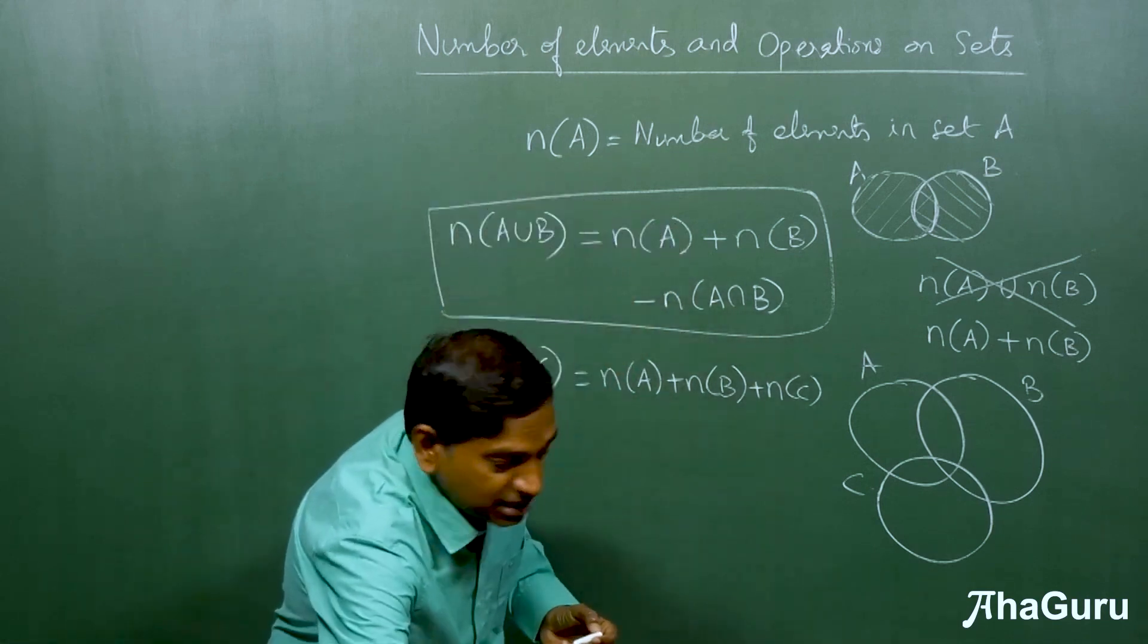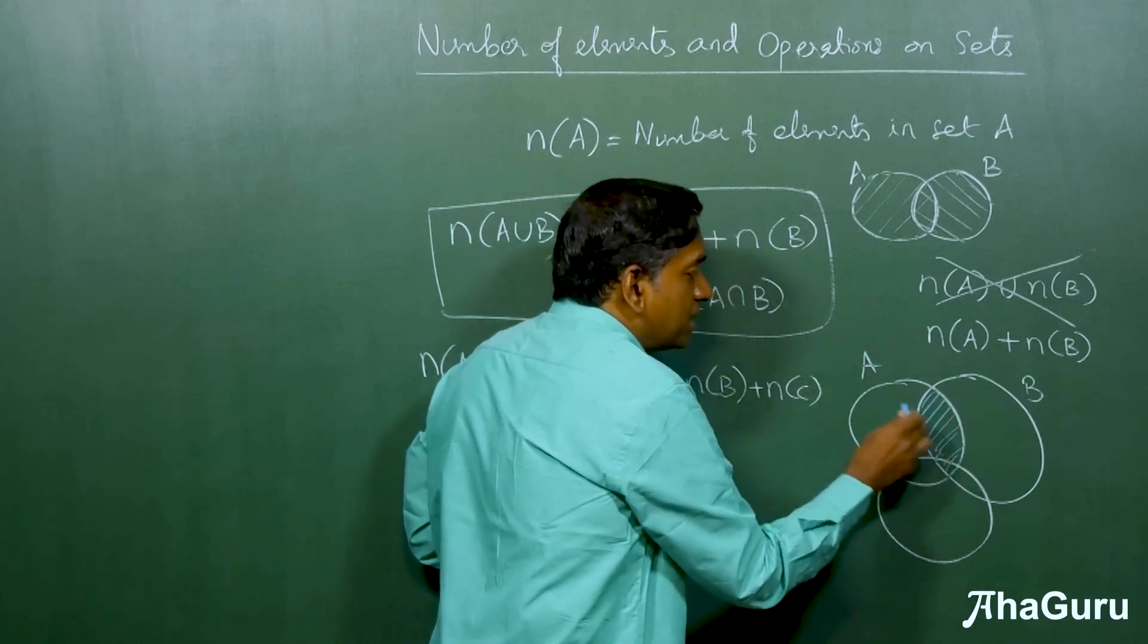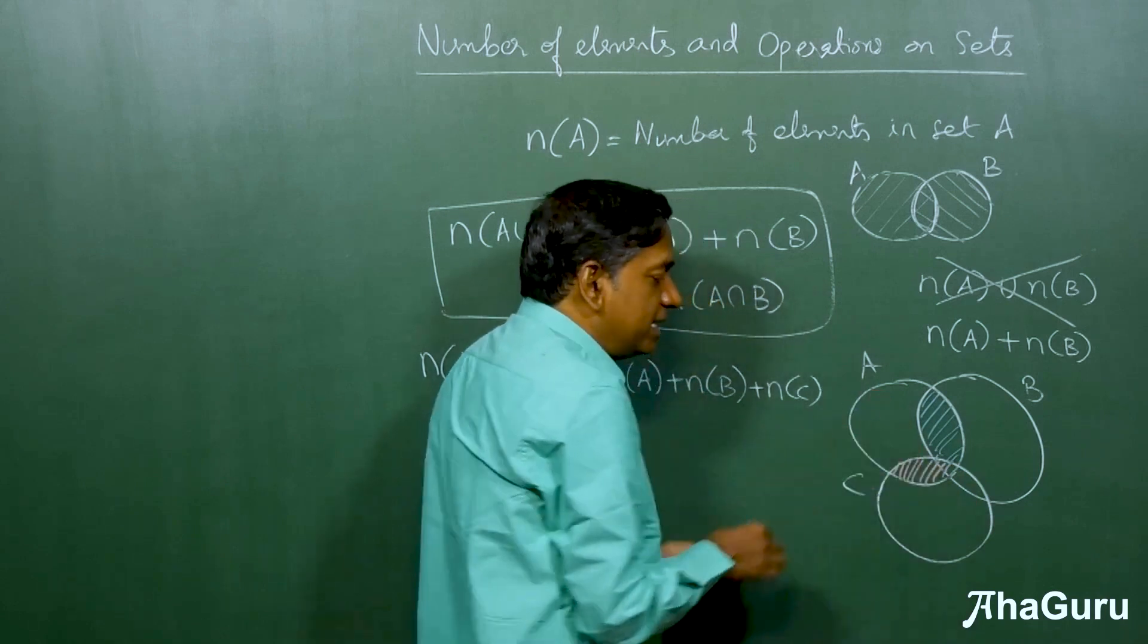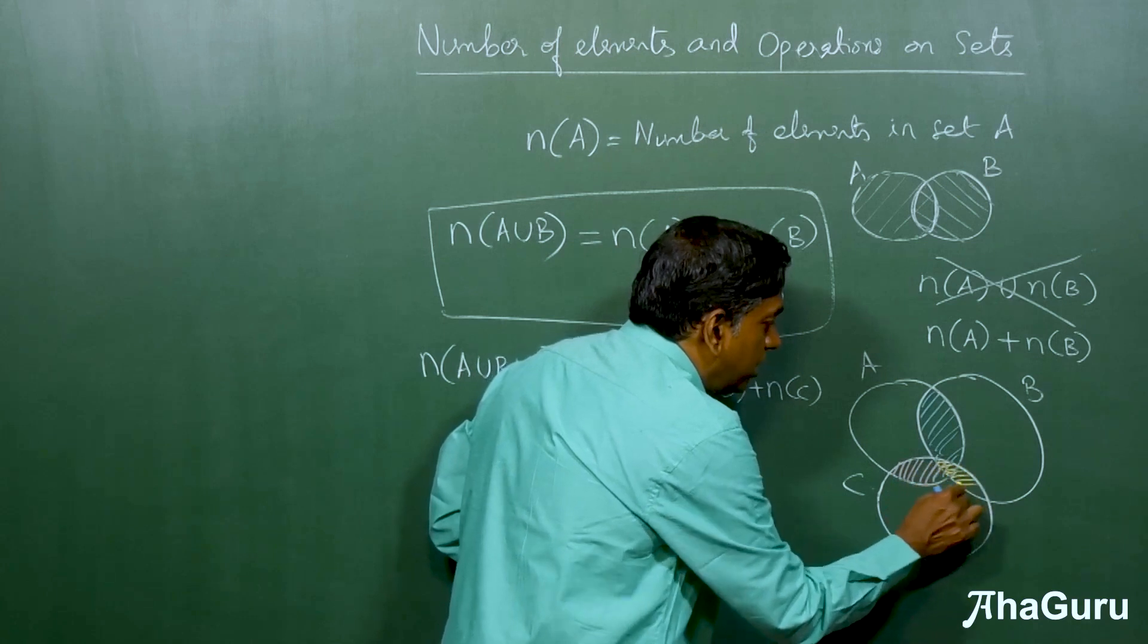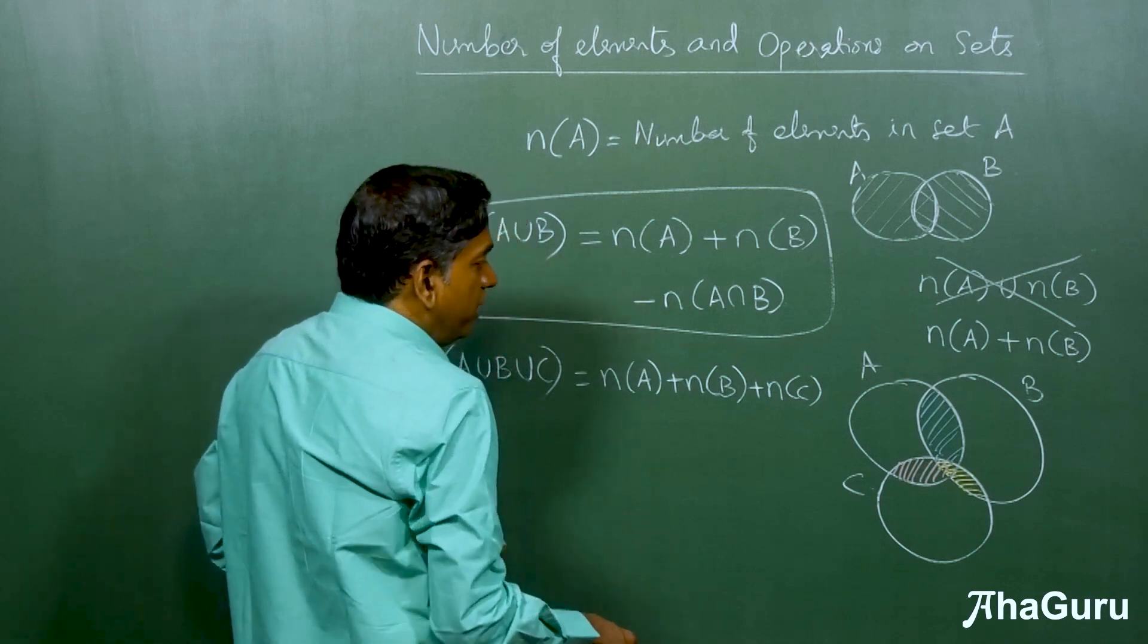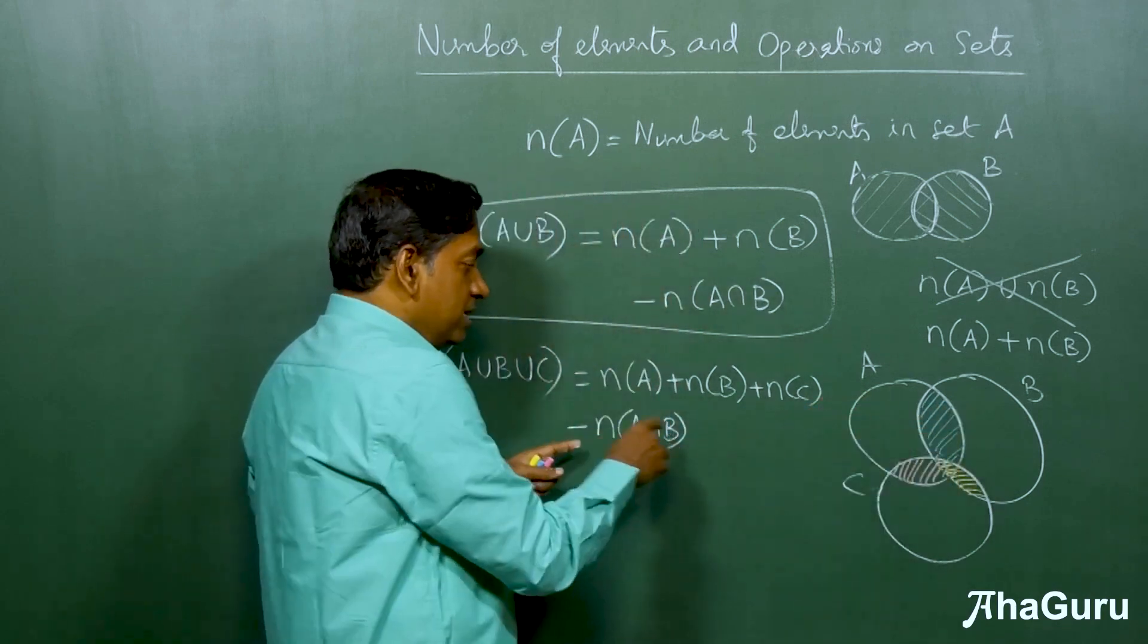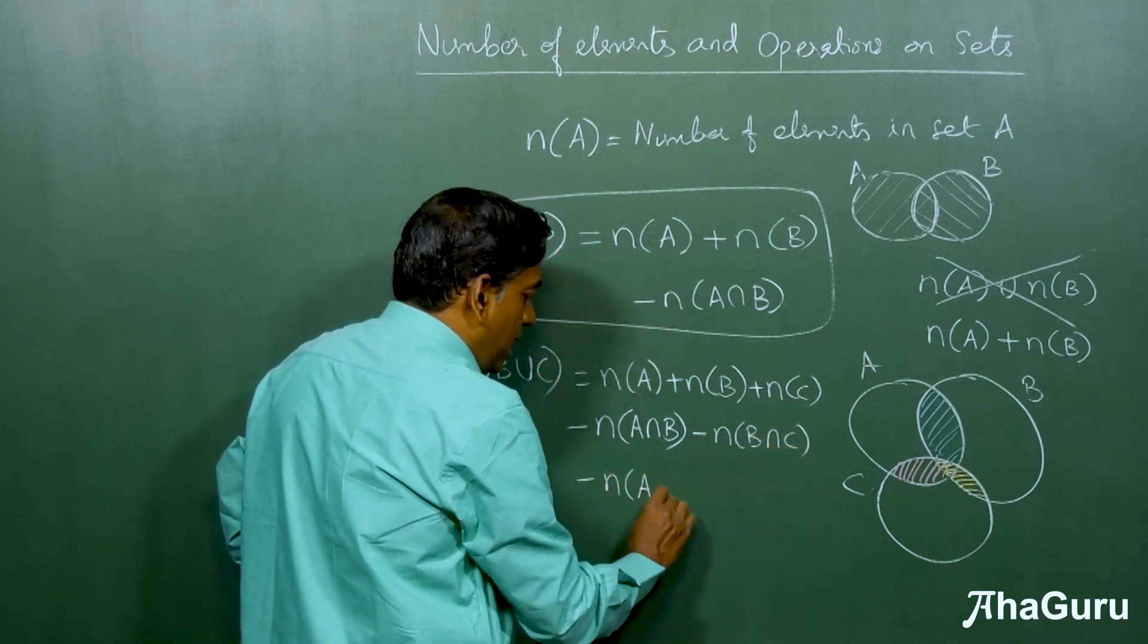For example, this region will be double counted because it comes in A as well as B. Similarly, this region will be double counted because it comes in A as well as C. And finally, this region will also be double counted because this comes in B and C. So now, what we will do is we will subtract the A intersection B region because we counted it twice. Similarly, let's subtract the B intersection C and the A intersection C.